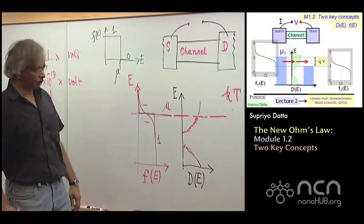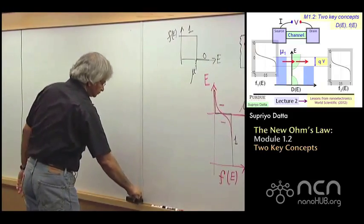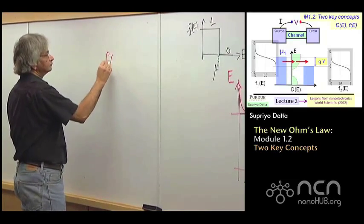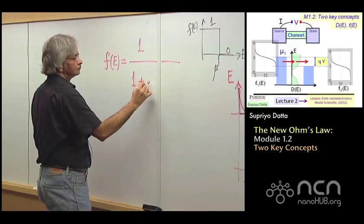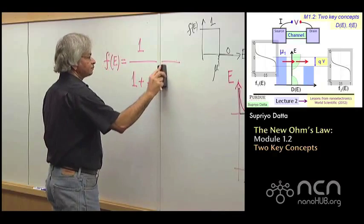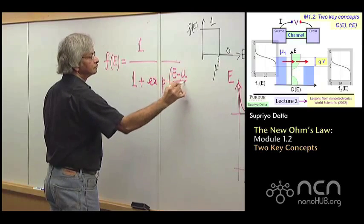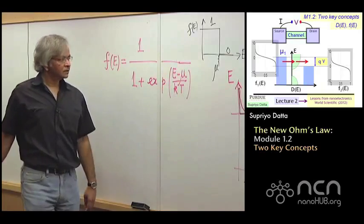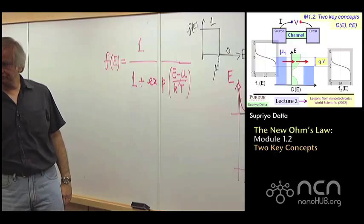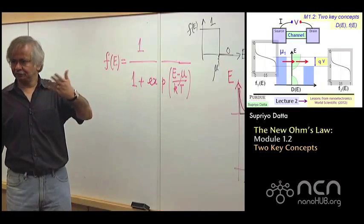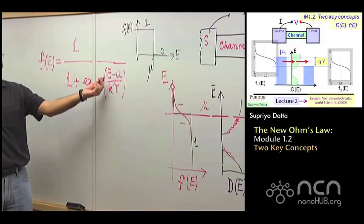We'll write it as exponential. So, this is the mathematical form of the function. And what you can check is that if you take this and plot it as a function of E, which you could do if you have something like MATLAB or equivalent, you could easily check, it would look like what I've sketched here.